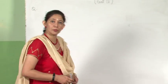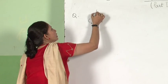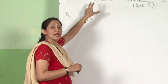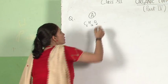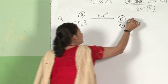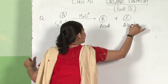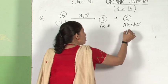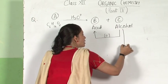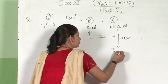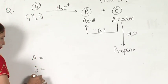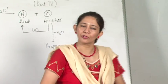Now let me give you a word problem of the type that comes in examinations. I am dictating the statement and converting it into a flow chart. There is an organic compound A with molecular formula C₆H₁₂O₂. On acid hydrolysis it gives an acid B and an alcohol C. Identify A, B, and C — you should be able to do this based on what has been taught.